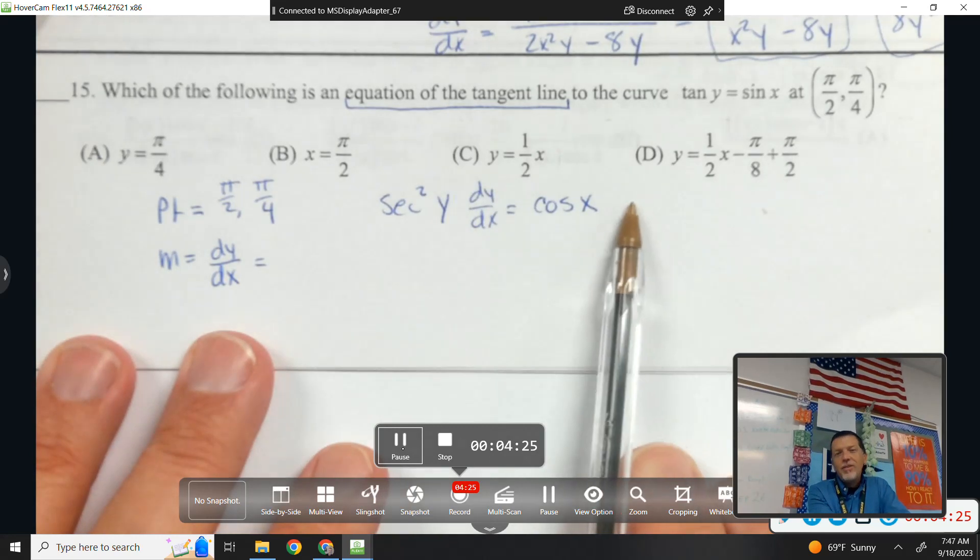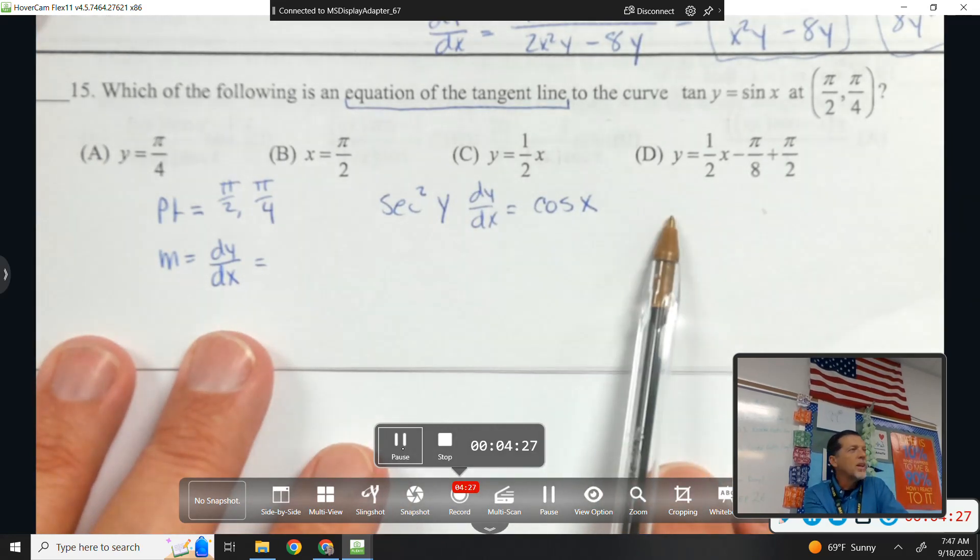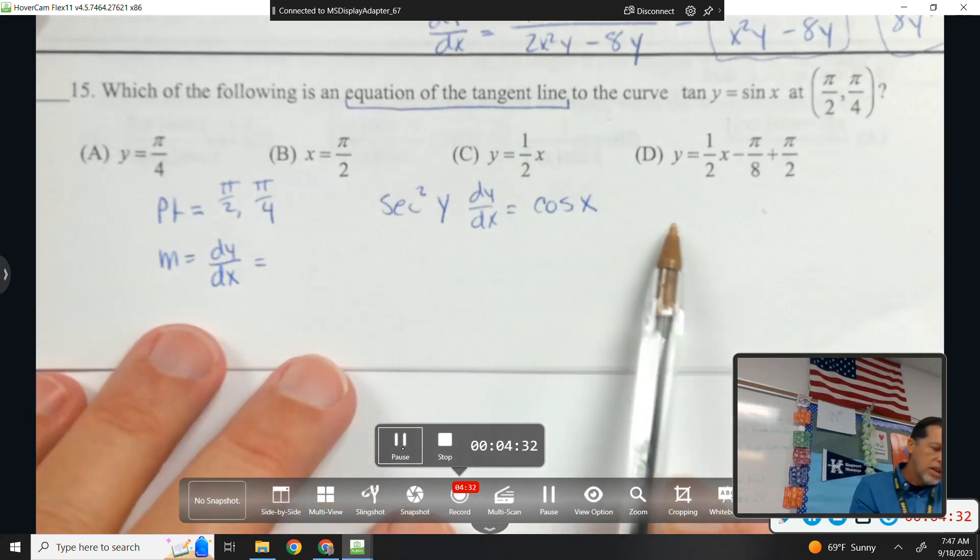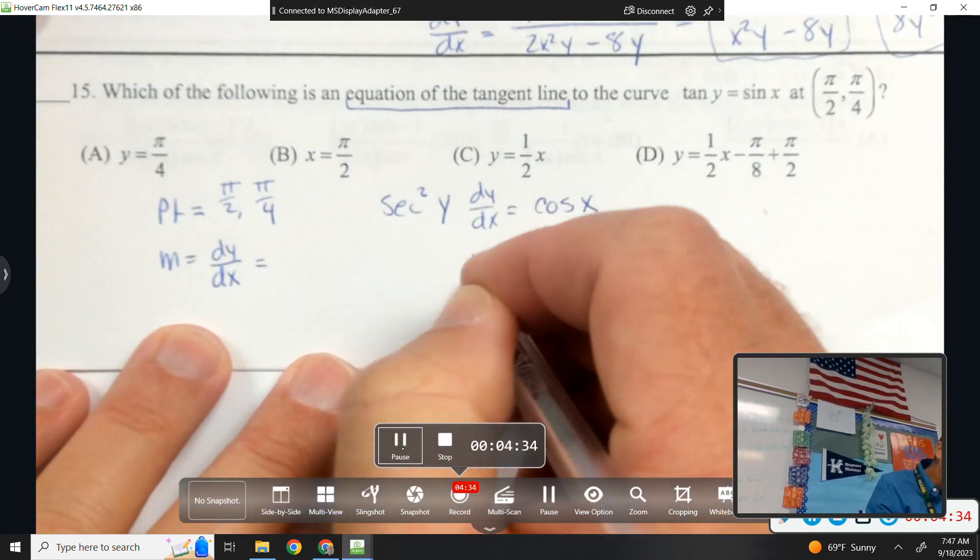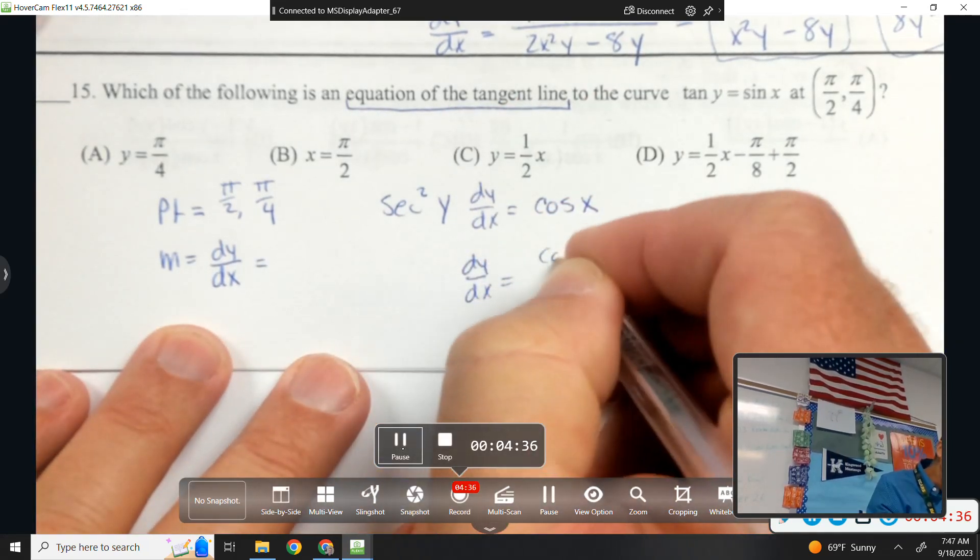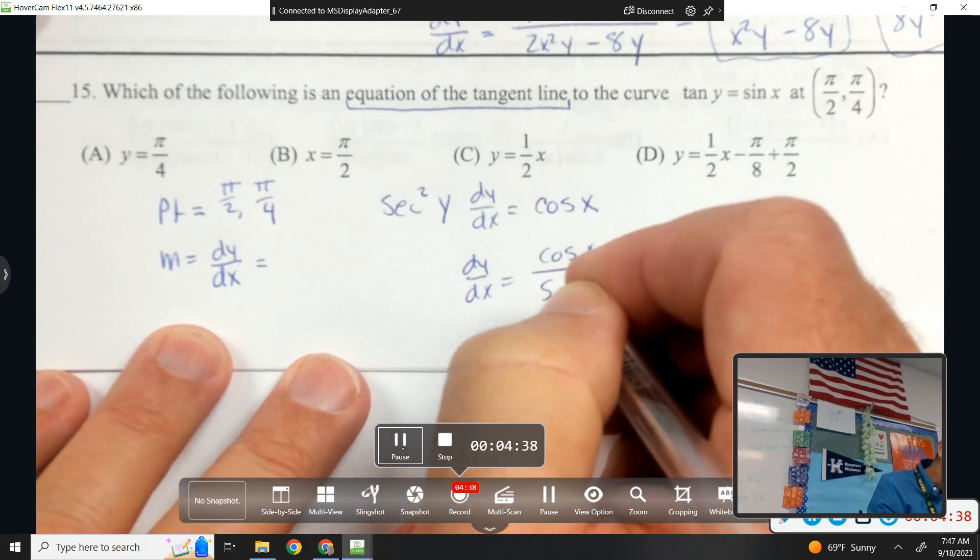That's correct. If you really want to go chain rule, you could do times one. If you want to overkill it with making sure you chain rule every time. So dy/dx equals cosine of x over secant squared of y.